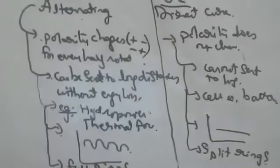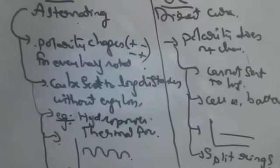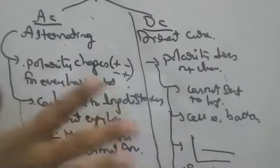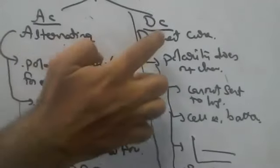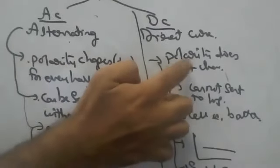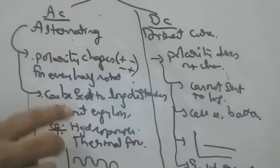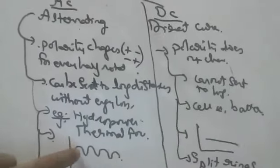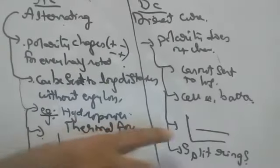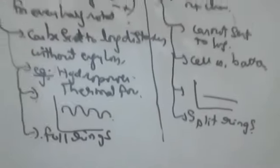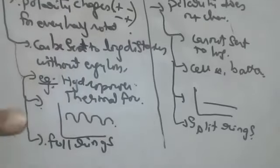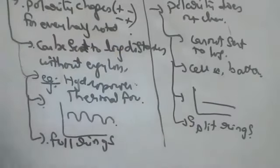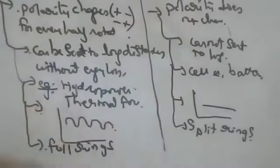So these are the differences between AC and DC. In the exam, always write in a comparison/differentiation column format — do not write in points or you will not get marks. AC means alternating current, DC means direct current. Polarity changes versus polarity does not change. Can be sent to long distances versus cannot be sent to long distances. Sources: hydro power stations and thermal power stations versus cell or battery. Graph: wave shape versus straight line. AC uses full rings, DC uses split rings.